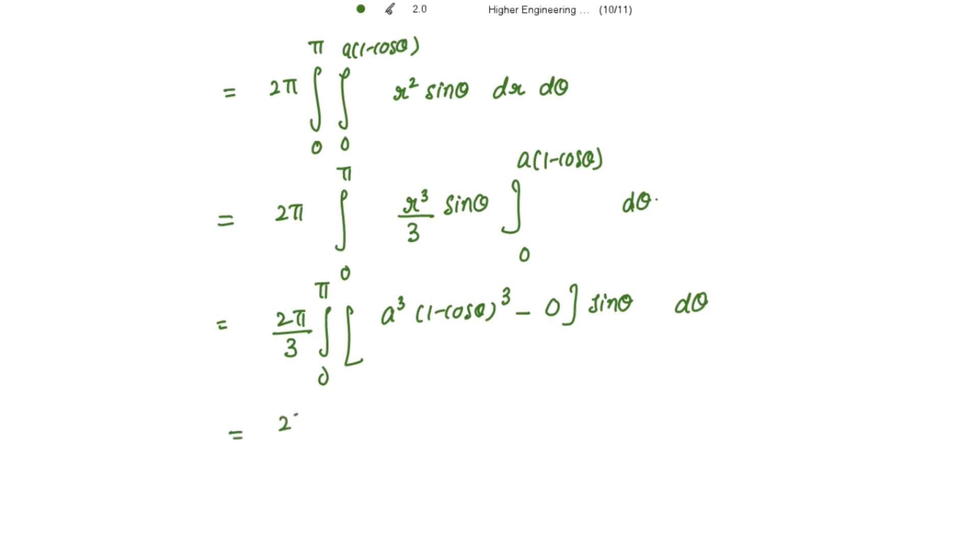So this is 2 pi over 3, 0 to pi, and this will be a cube 1 minus cos of theta cube sin theta d theta.